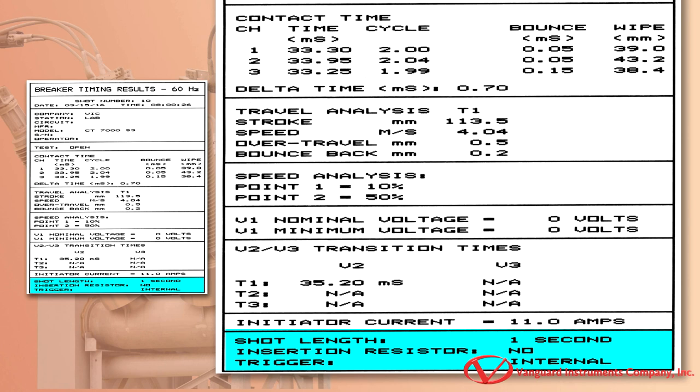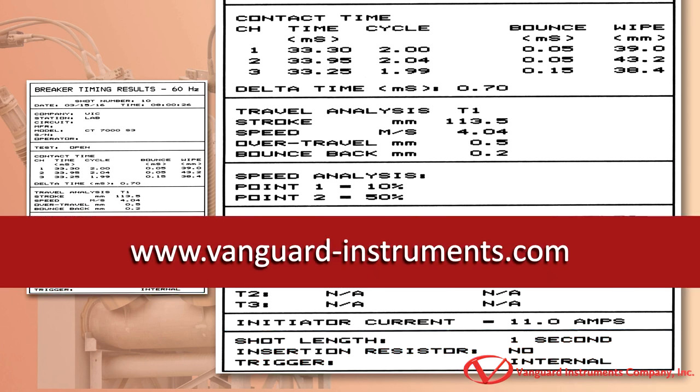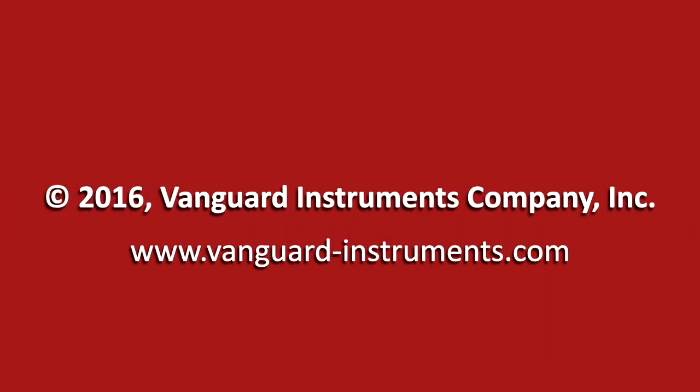This last section shows additional test information. We can see that the shot duration was one second, there was no insertion resistor in the circuit breaker under test, and the trigger mode was set for internal trigger. Thank you.